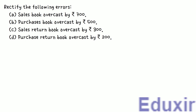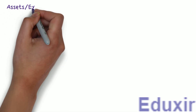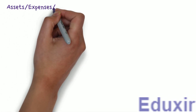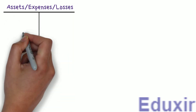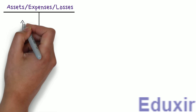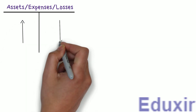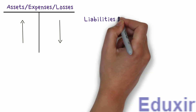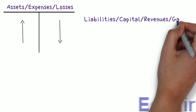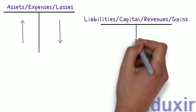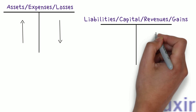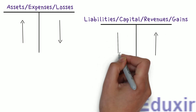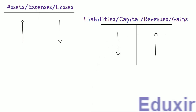Before we proceed with the analysis of these particulars, let's first do a small recap. In case of assets or expenses or losses, any increase in any of these should be debited and any decrease should be credited. Whereas in case of liabilities or capital or revenues or gains, any increase in any of these should be credited and any decrease should be debited.